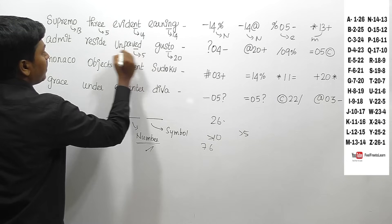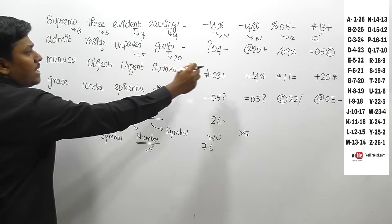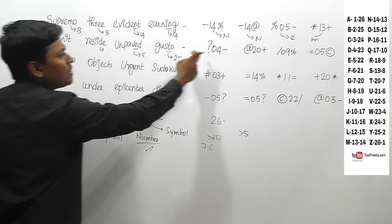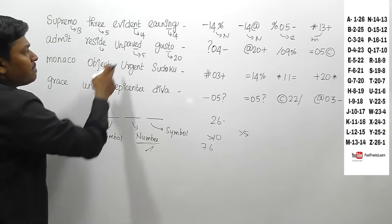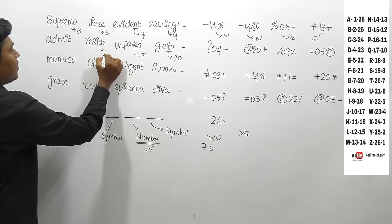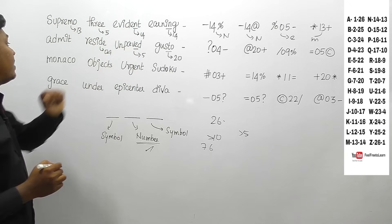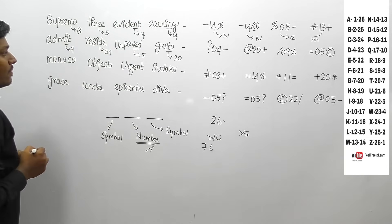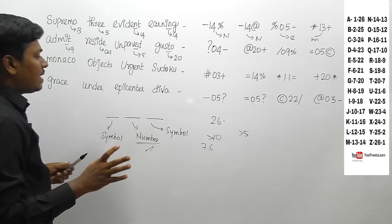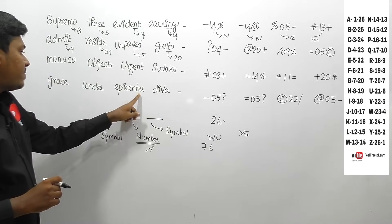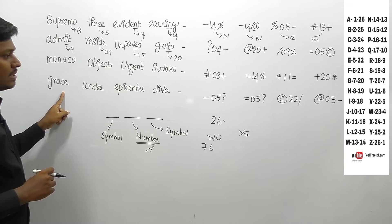We know T will be 20, E will be 5. Checking the pattern — yes, 20 is there. So 'gusto' should be coded with 20 at the center, and 'unpaved' where E is coded as 5, D as 4, and I as 9 according to alphabetical order. Similarly, V is 22, E is 5, C is 3. This confirms the numbers represent the second letter from the last in alphabetical order.